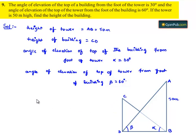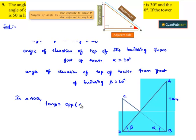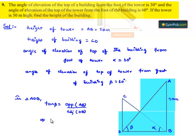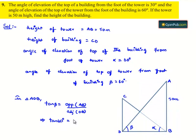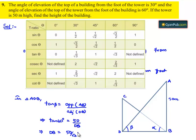Now to solve this, let us consider triangle ABD. Tan(beta) is equal to the opposite side AB divided by the adjacent side DB — the distance between the tower and the building. That implies tan(60°) equals 50 divided by DB, which gives DB equals 50 divided by tan(60°), that is 50 divided by √3 meters.